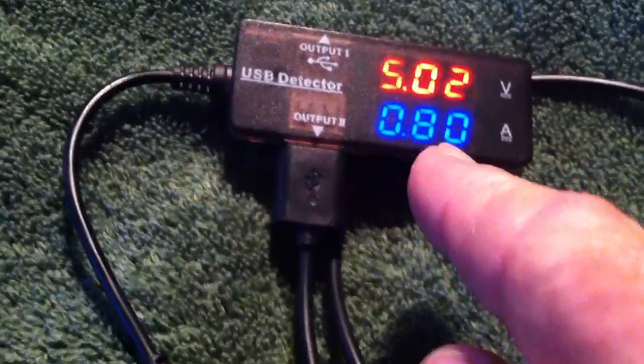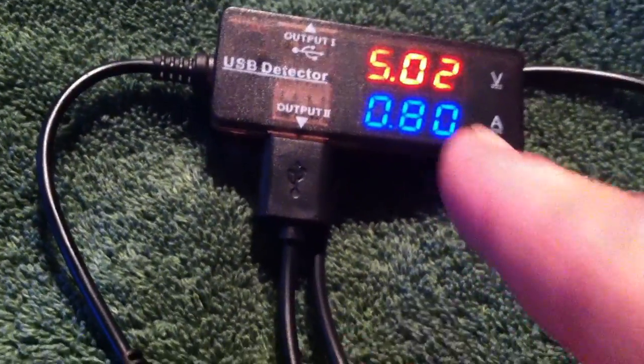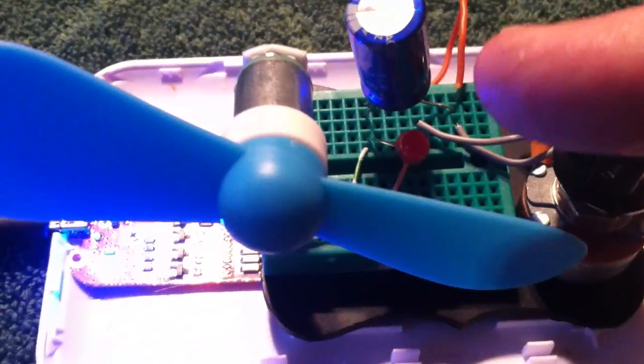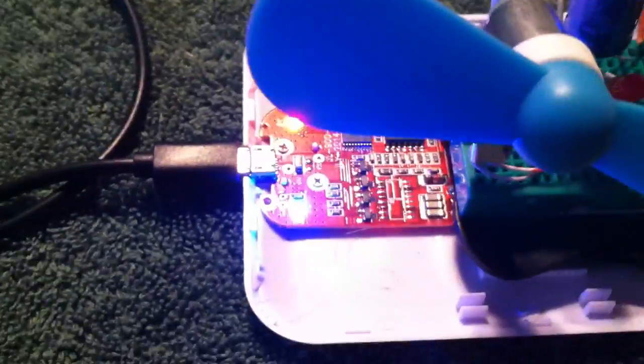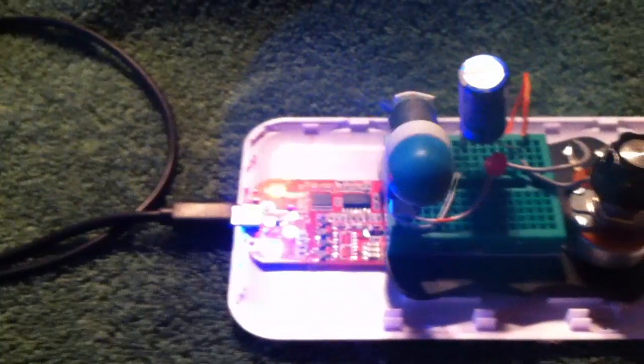Now the energy is coming out of that power bank right there, 5 volts going through a voltage ammeter there, and it's going into this super capacitor wirelessly. And this should start up now. There it goes.